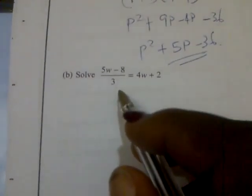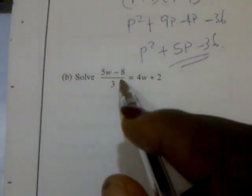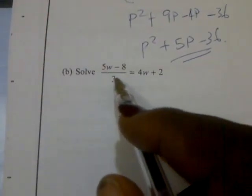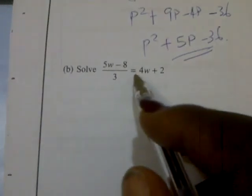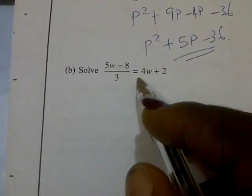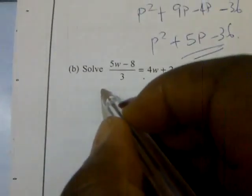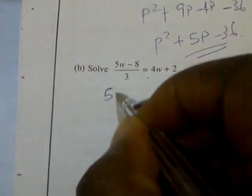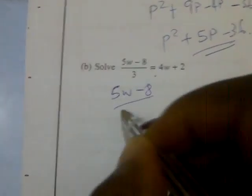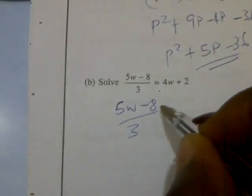Okay, now 14b says: solve 5w minus 8 over 3 equal to 4w plus 2. You have (5w - 8) over 3.